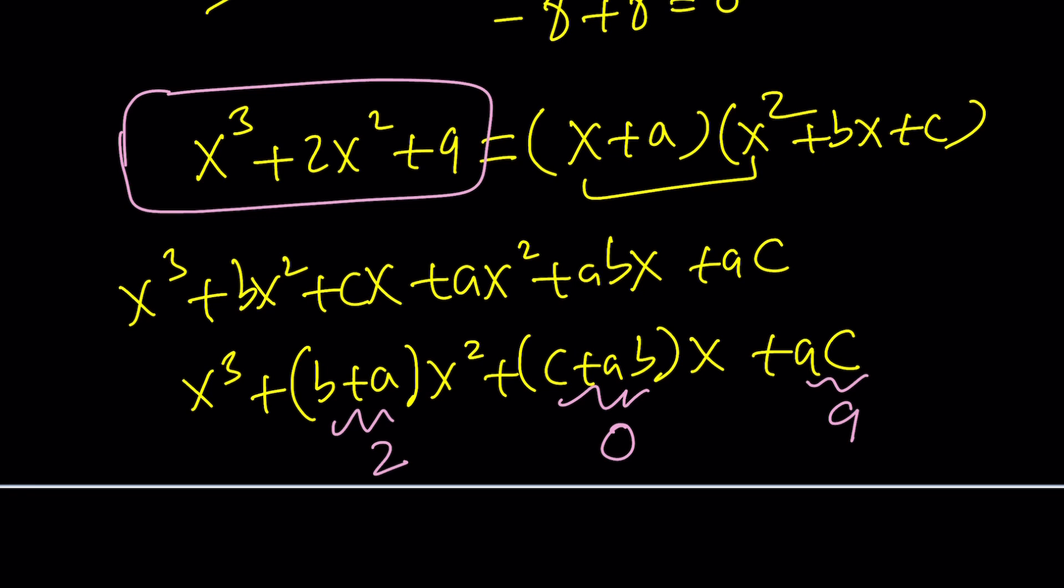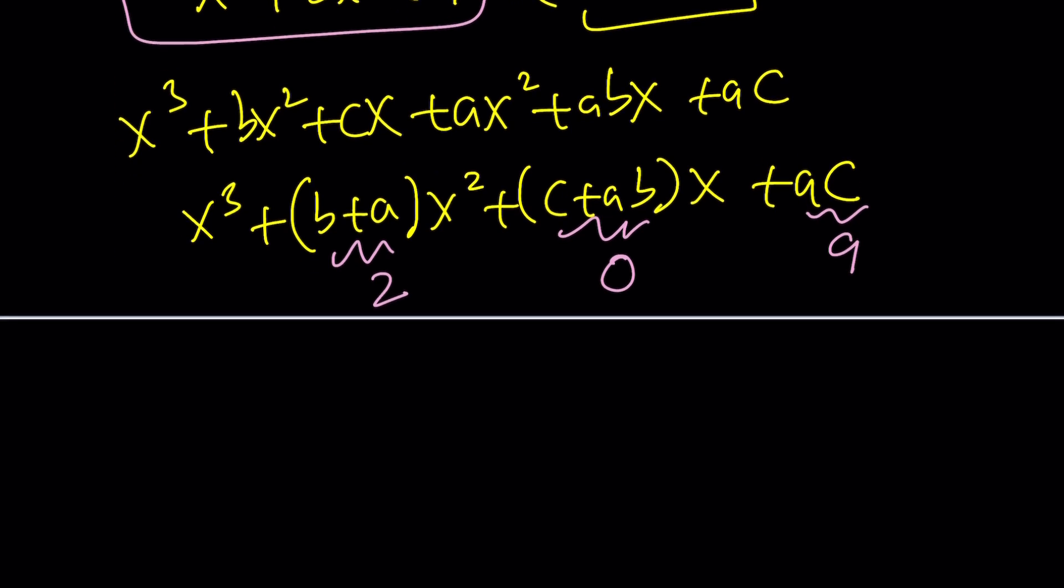Now, if you're looking for, if there are any integer solutions, ac should be 9. That indicates if ac are integers, then 1, 9, negative 1, negative 9, 3, 3. But you kind of need to test it out, for example. And also, of course, c plus ab equals 0 gives us another option, which means c is equal to negative ab.